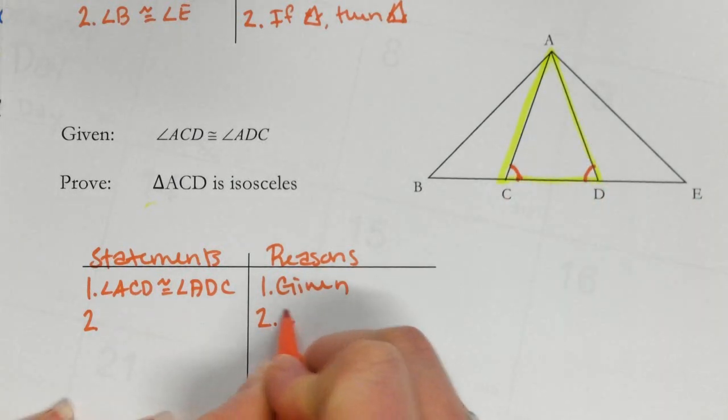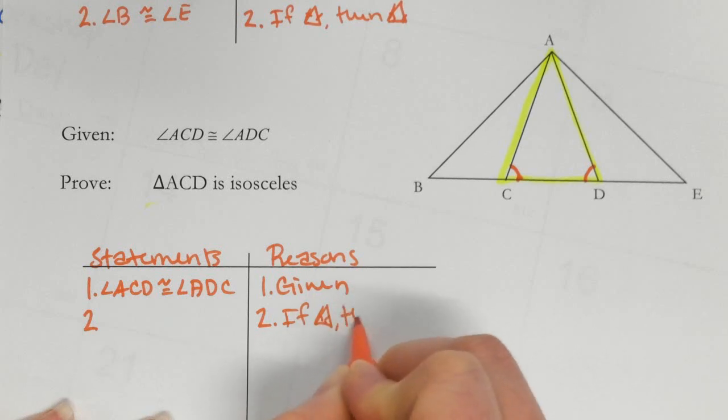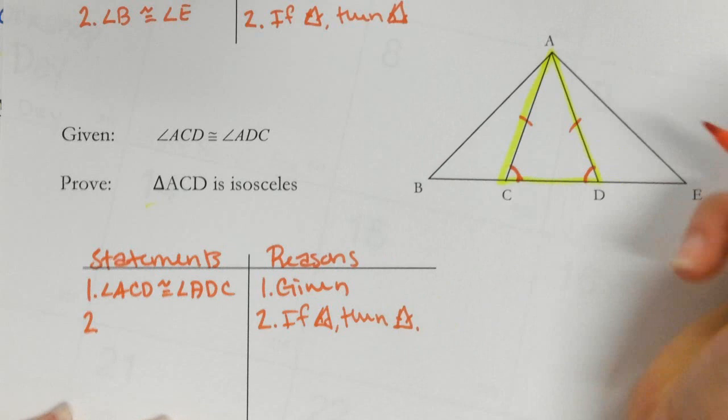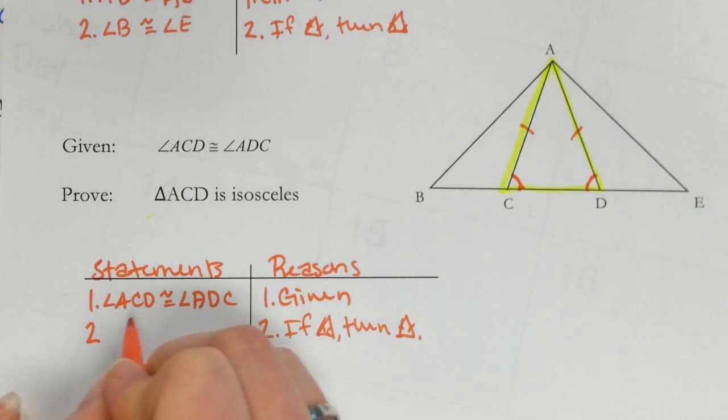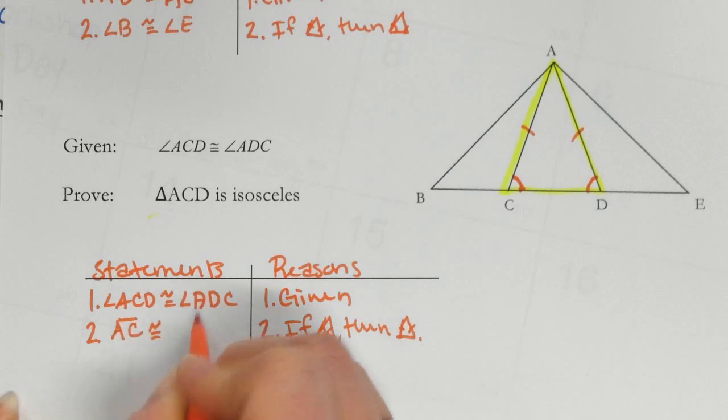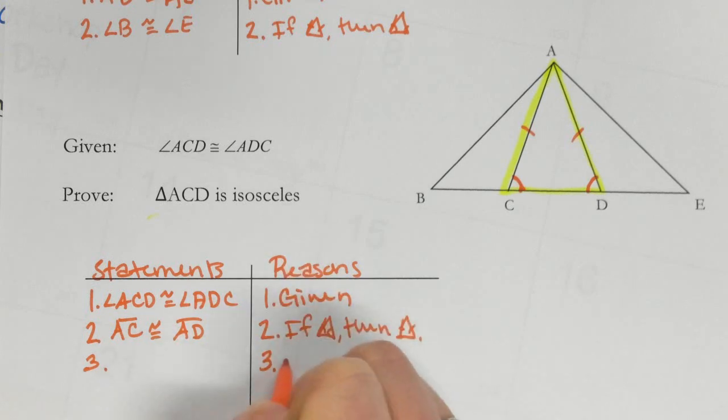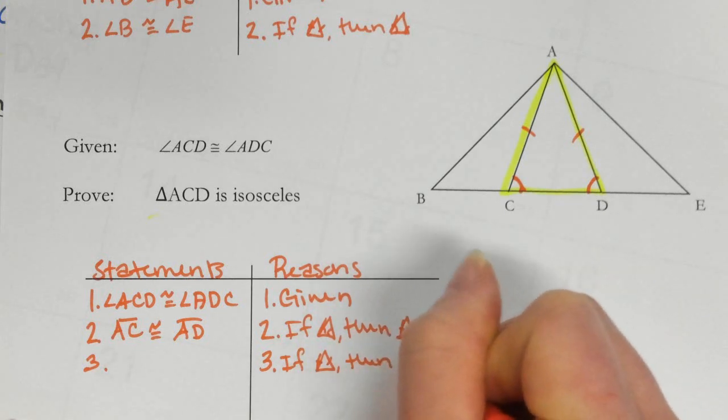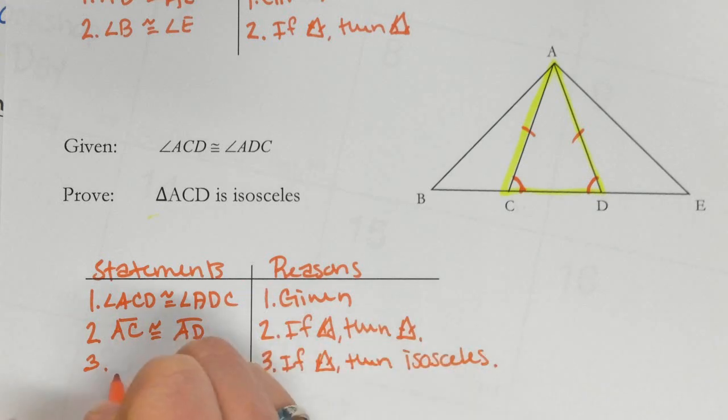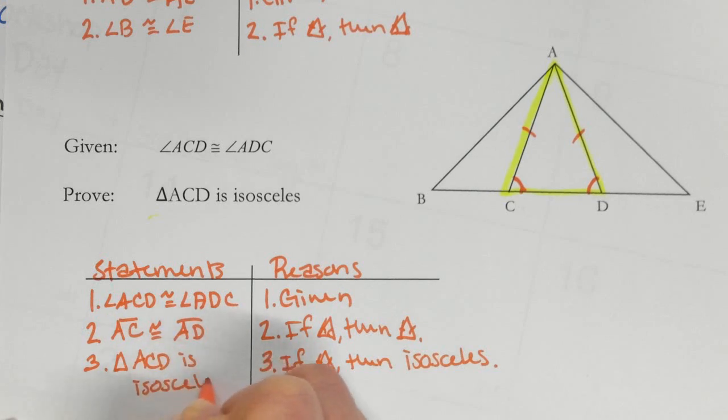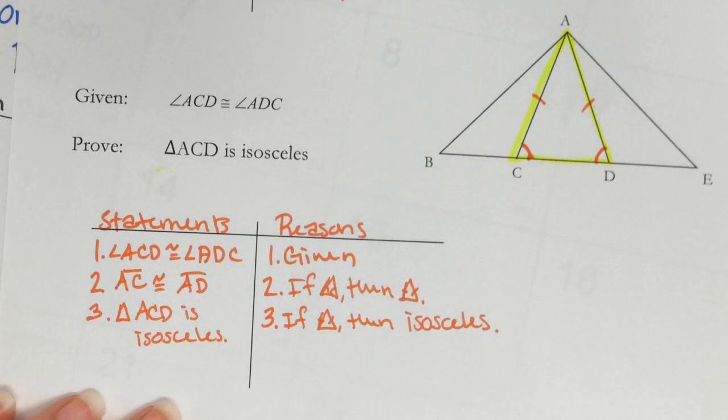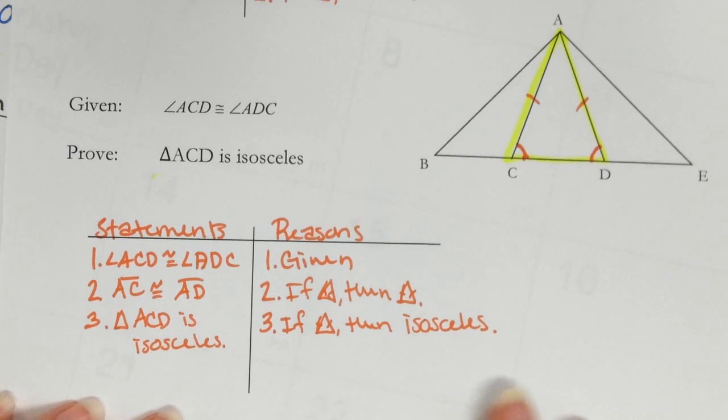Well, if two angles are congruent, then two sides are congruent. So if two sides are congruent, I can say that AC is congruent to AD. Well, now, if two sides are congruent, then isosceles, by the definition. So I can say that triangle ACD is isosceles.